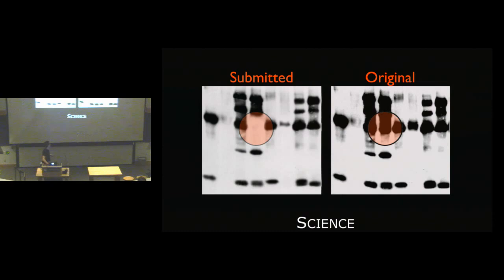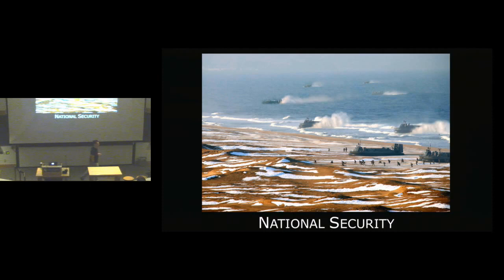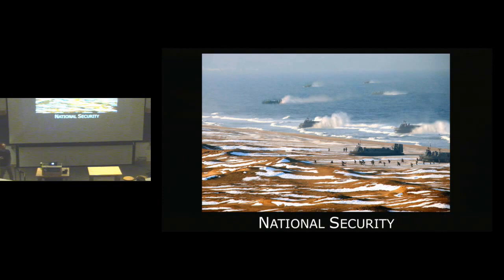On the national security front, we see issues of photo fraud. This is a photograph released by North Korea as they were seeking to intimidate their neighbors — it shows hovercrafts landing with military troops. If you look closely, this hovercraft is the same as this hovercraft, which is the same as this one. They're just cloned copies of each other. There are parts of the world we have very little access to — North Korea, Iran — and the way they give us information is through photographs. Suddenly, what's real, what's not? As a side note, I think it's hard to take a country seriously that can't figure out how to use Photoshop.